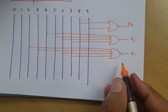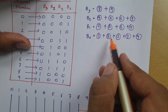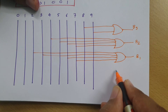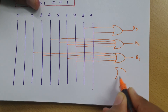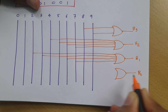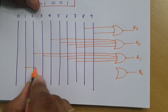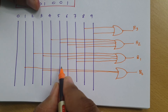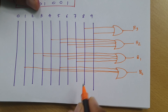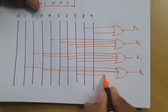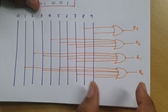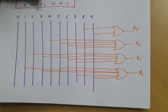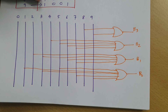For B0, it is 1 OR 3 OR 5 OR 7 OR 9. So we connect terminals 1, 3, 5, 7, and 9 through an OR gate to obtain B0. That is how we form the complete circuit for the decimal to BCD encoder.